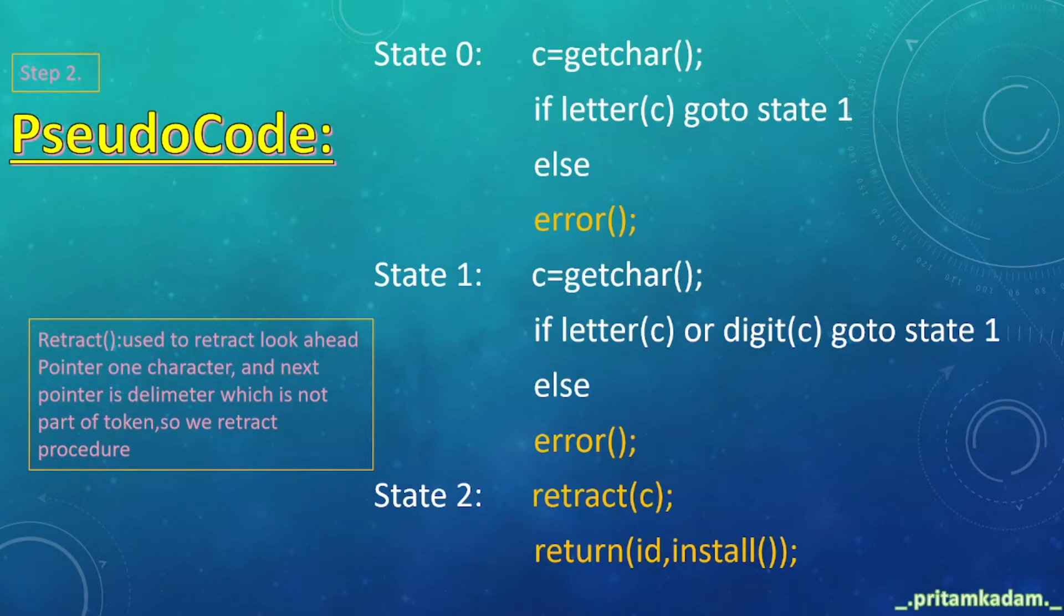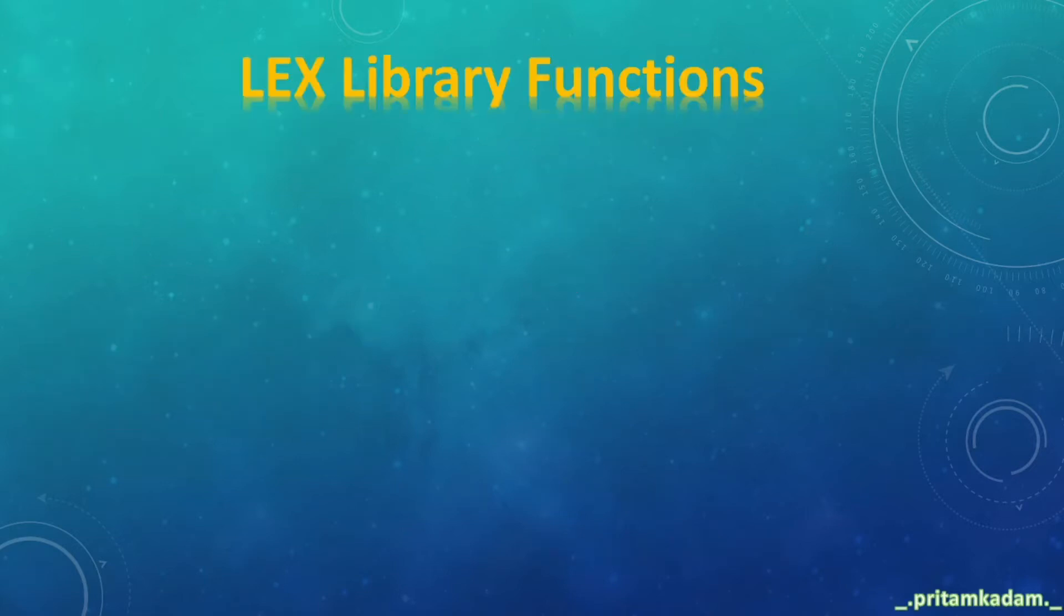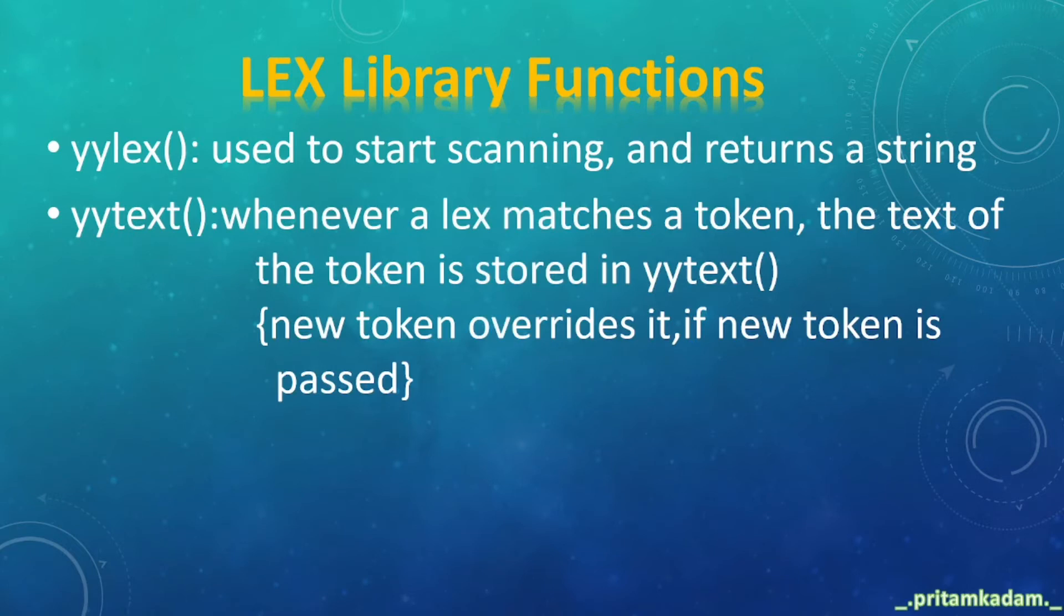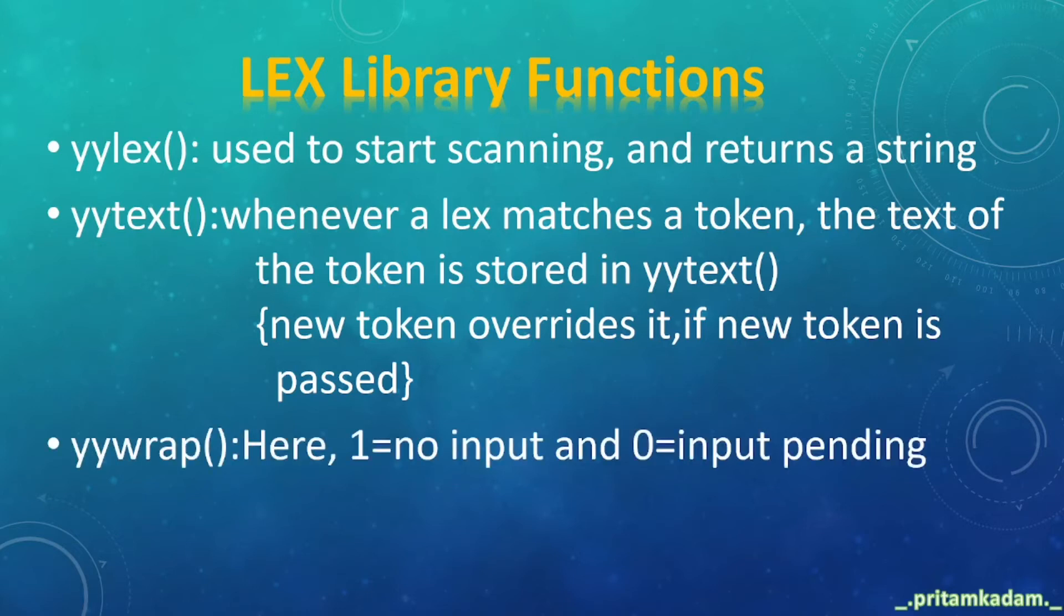What are the lex library functions? yylex is used to start scanning and returns a string value. yytext: whenever lex matches a token, the text of the token is stored in yytext. New token overrides it if new token is passed. yywrap: 1 equals no input, and 0 equals input pending. yyerror reports or detects error.